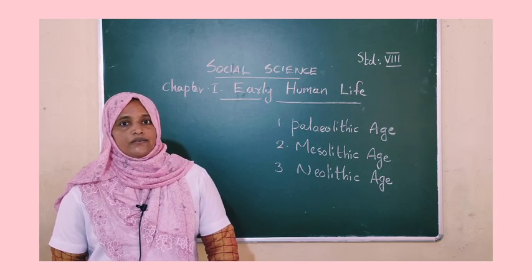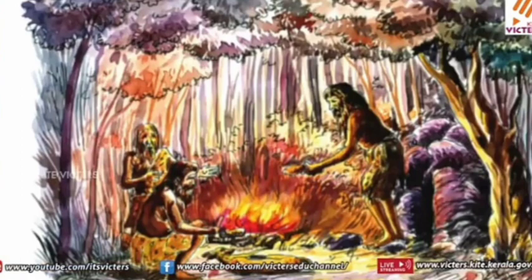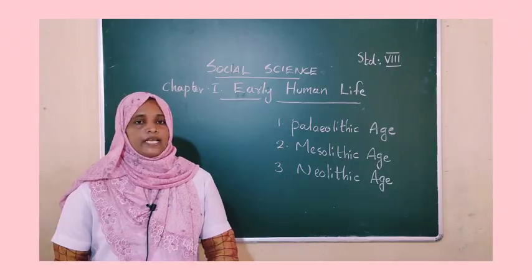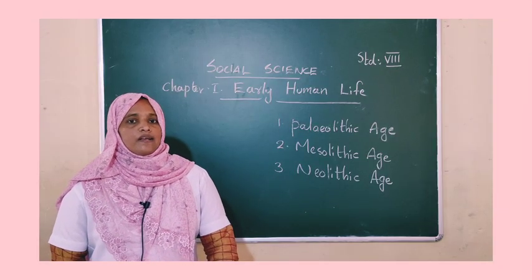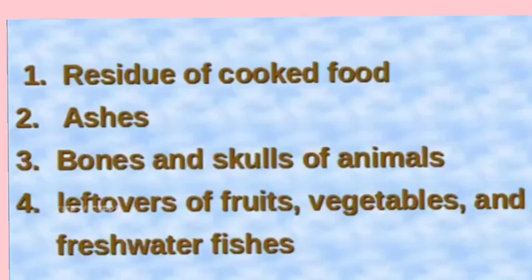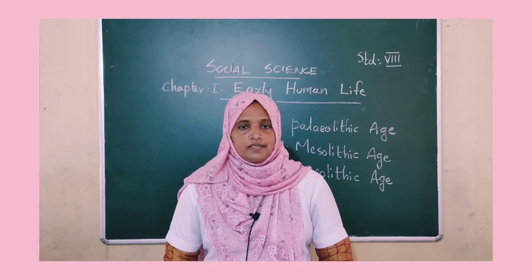Paleolithic man also used fire. Animal fat was used as fuel for lighting in places where sunlight was insufficient. In addition to this, many evidences were discovered, including cooked food residues, ashes, leftovers of fruits, vegetables, freshwater fishes, bones, and skulls of animals.